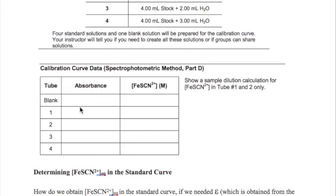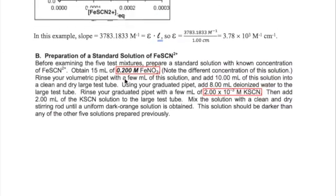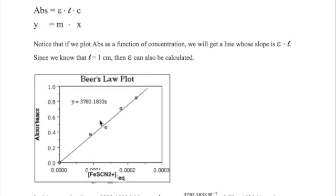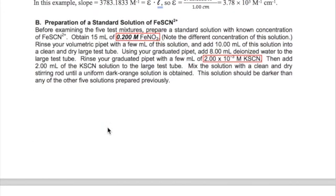You will then plot the values of absorbance against concentration and fit that data using a line equation. As I show here, the slope of that line can then be used to determine your epsilon. So hopefully that sequence of steps makes sense.